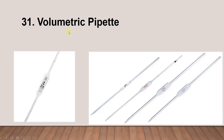Next is the volumetric pipette. As you can see, each volumetric pipette delivers a constant volume — 5, 10, 20, or 25 ml. All of these are called volumetric pipettes.